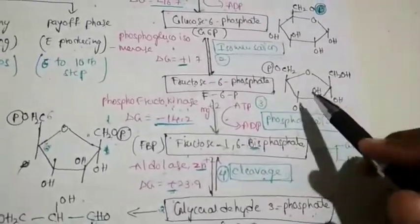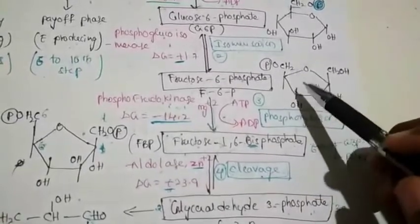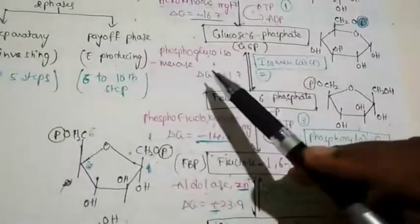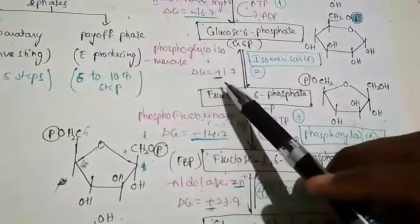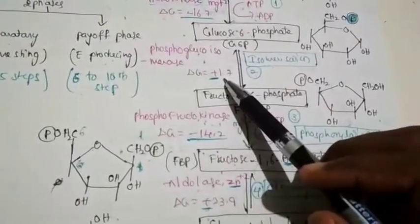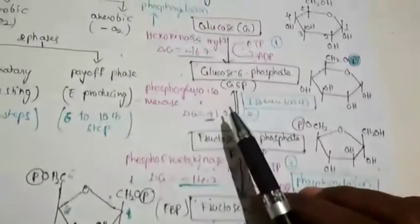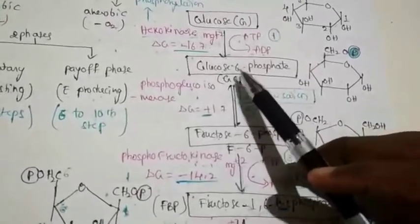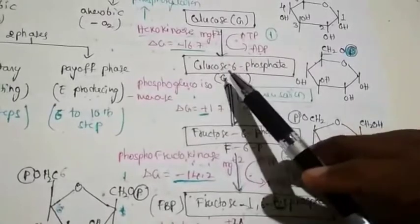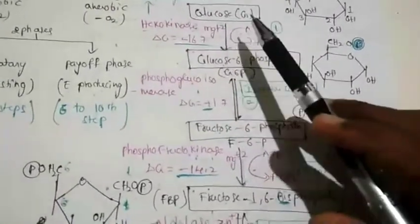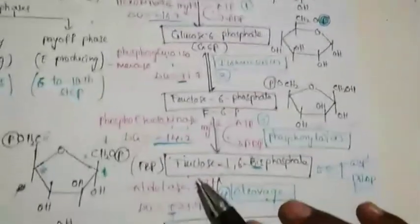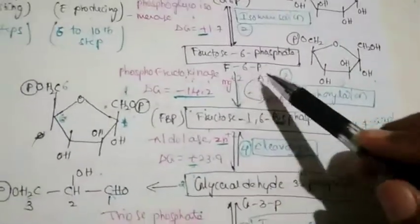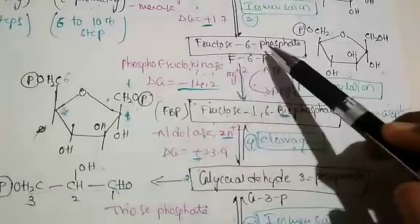Fructose-6-phosphate is similar to glucose because it is an isomer of glucose. The enzyme involved in this reaction is phosphoglucoisomerase. This is an endergonic process because the free energy change here is a positive value. The first step is unidirectional — glucose is converted to glucose-6-phosphate, but glucose-6-phosphate is not converted back to glucose. The second step is bidirectional.